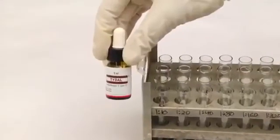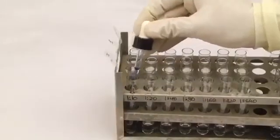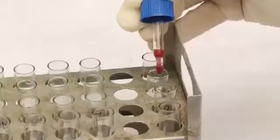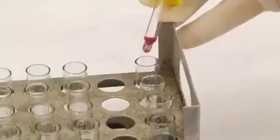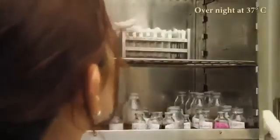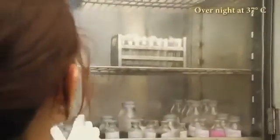To all the tubes, that is 1 to 8 of each set, add 1 drop of the respective well-mixed antigen suspensions from the reagent vials and mix well. Cover and incubate overnight at 37 degrees centigrade.